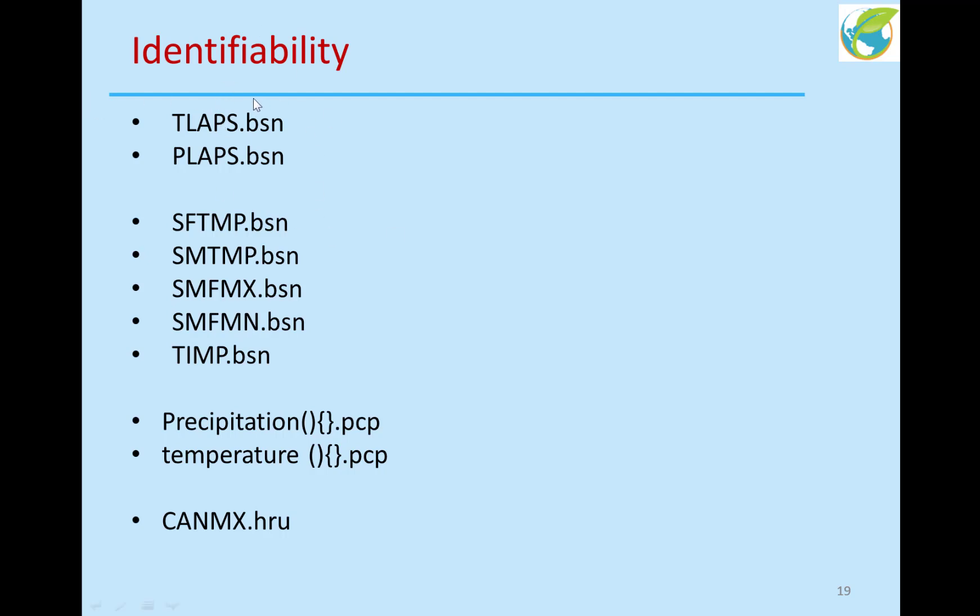So these are some examples of driving variables: TLAPS and PLAPS in the elevation band, all the snow parameters, precipitation and temperature, and canopy intercept. I cannot fit TLAPS and PLAPS with other parameters or with the other driving variable parameters. I have to fit them independently by themselves, fix their value, and then go to the next set.